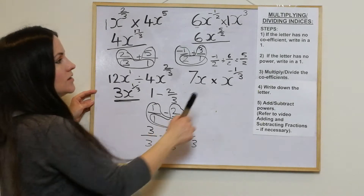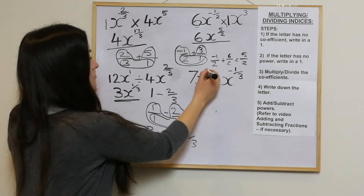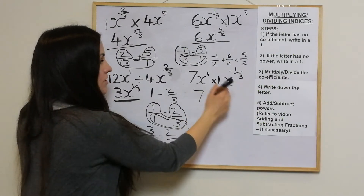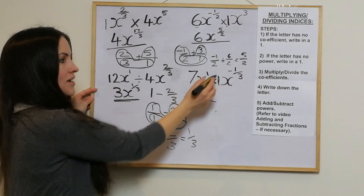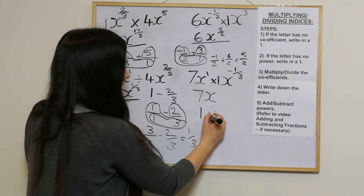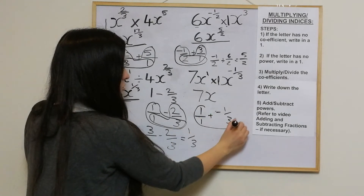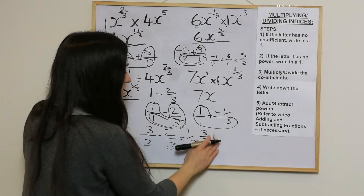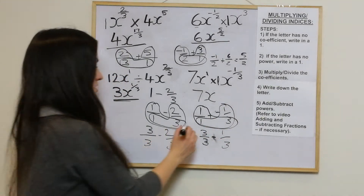The fourth example: 7x to the negative 1 third times x. There's no coefficient on the second x, so write in a 1. The second x has no power, so write in a 1. Multiply the coefficients: 7 times 1 is 7. Write down the letter x. Adding the powers: 1 add negative a third. Write 1 as 1 over 1, multiply by 3 to get 3 over 3, then take away 1 over 3, which becomes 2 over 3. So the answer is 7x to the power of 2 over 3.